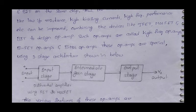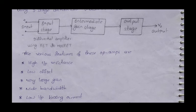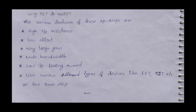These op-amps use a three-stage architecture: an input stage, an intermediate gain stage, and an output stage. The input stage uses a JFET differential amplifier with dual input and unbalanced output. The key features achievable with this architecture include high input resistance, low offset voltage, large gain, wide bandwidth, and low input bias current. Various types of devices like FET and BJT are used together on the same chip.